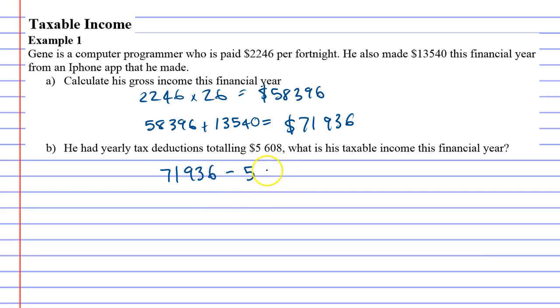And what we'll get is $66,328. And what this figure tells us is when the tax office wants to tax Gene.